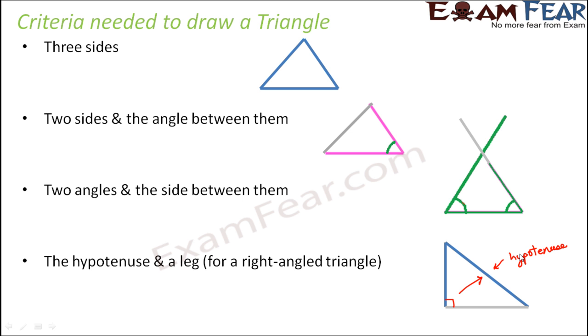So basically these are the four different criteria, which are the four different possibilities. So either you give us the three sides or you give us two sides and the angle between them, or you give us two angles and the included side, or you give the hypotenuse and leg of a right angle triangle. So with any one of these given sets of information, we can draw an accurate triangle.